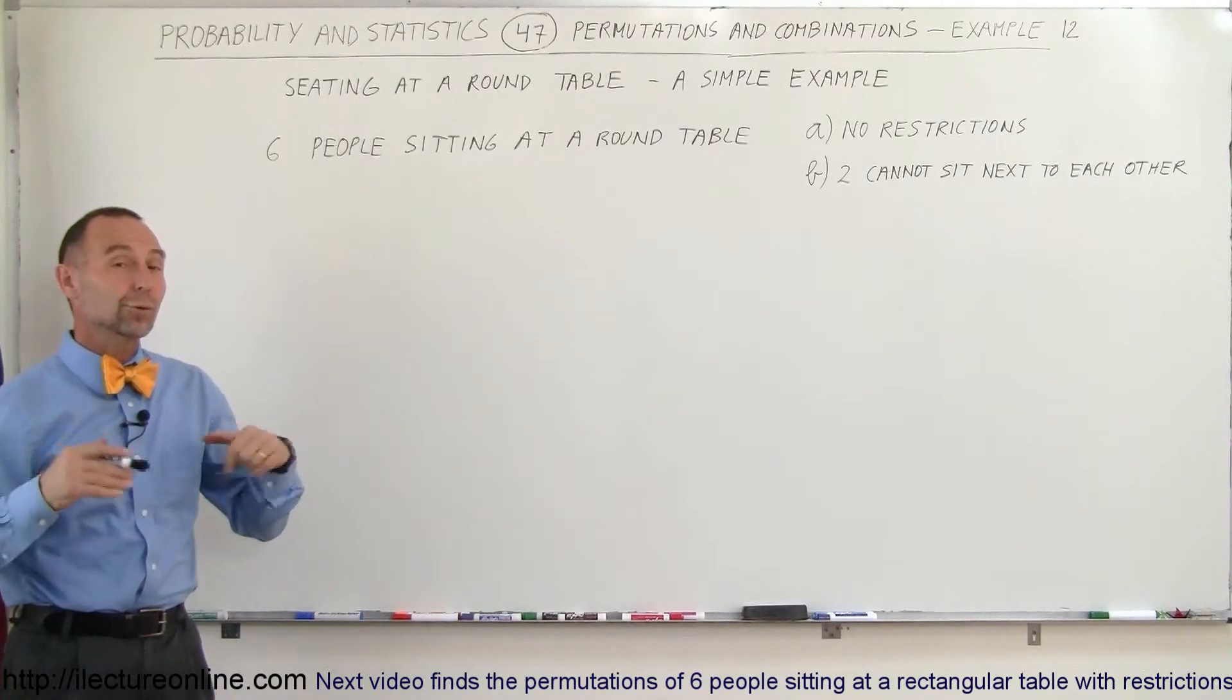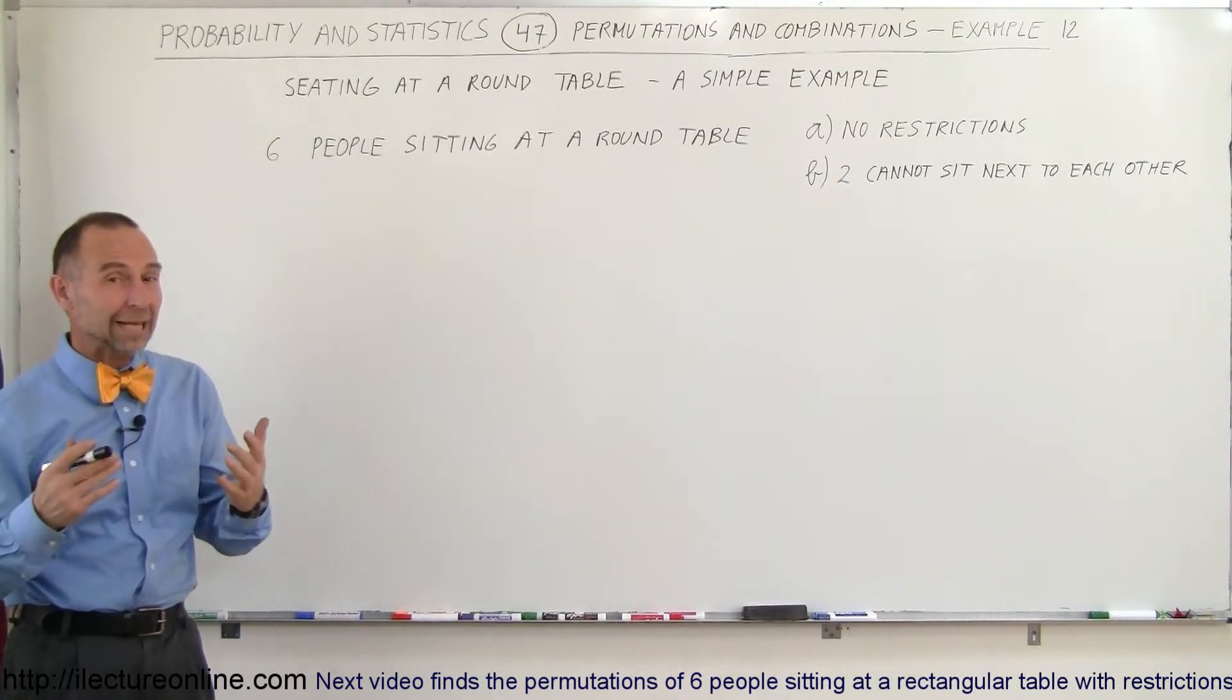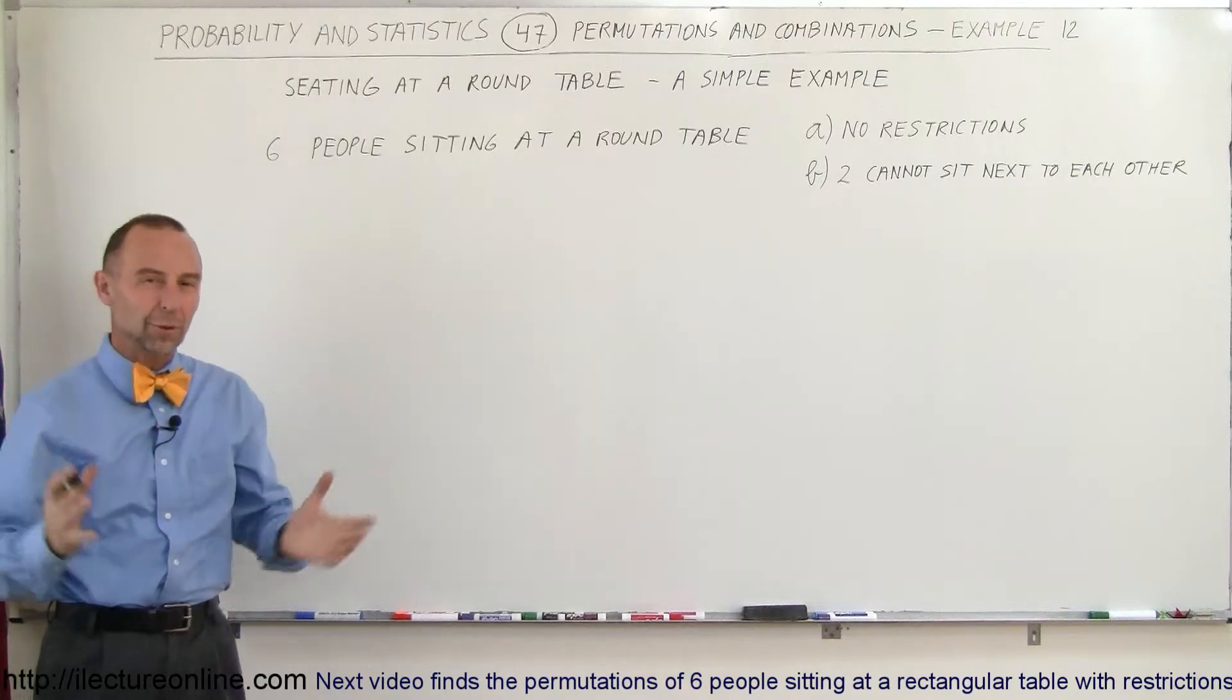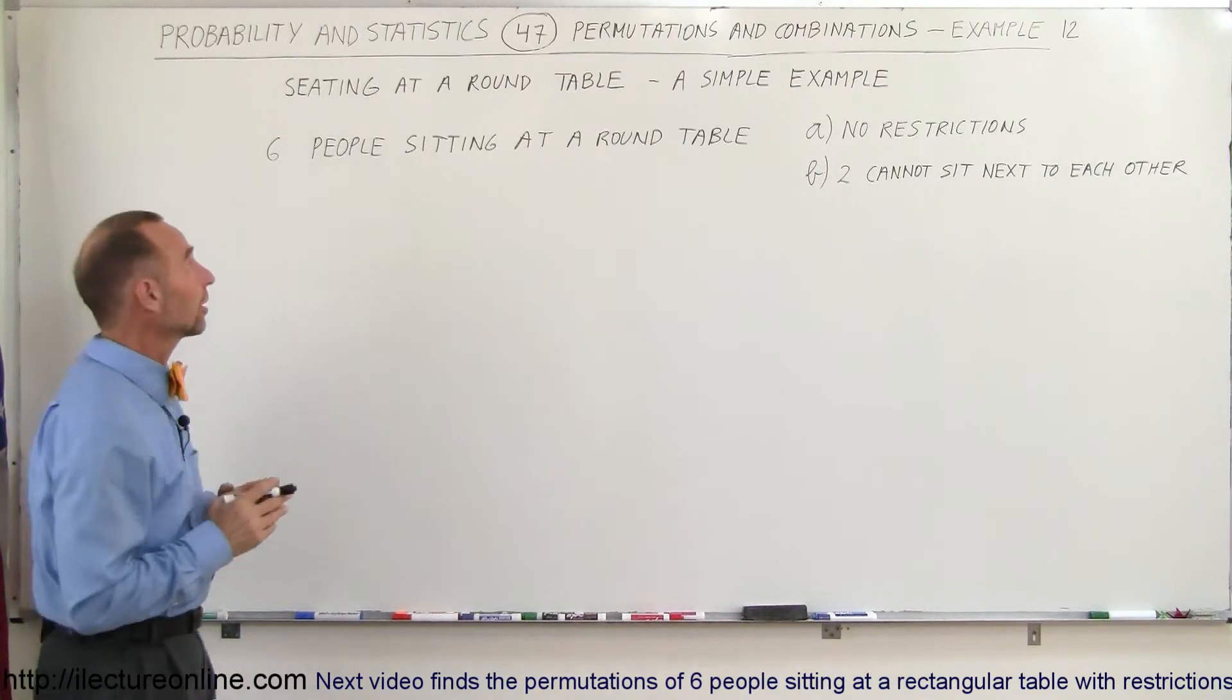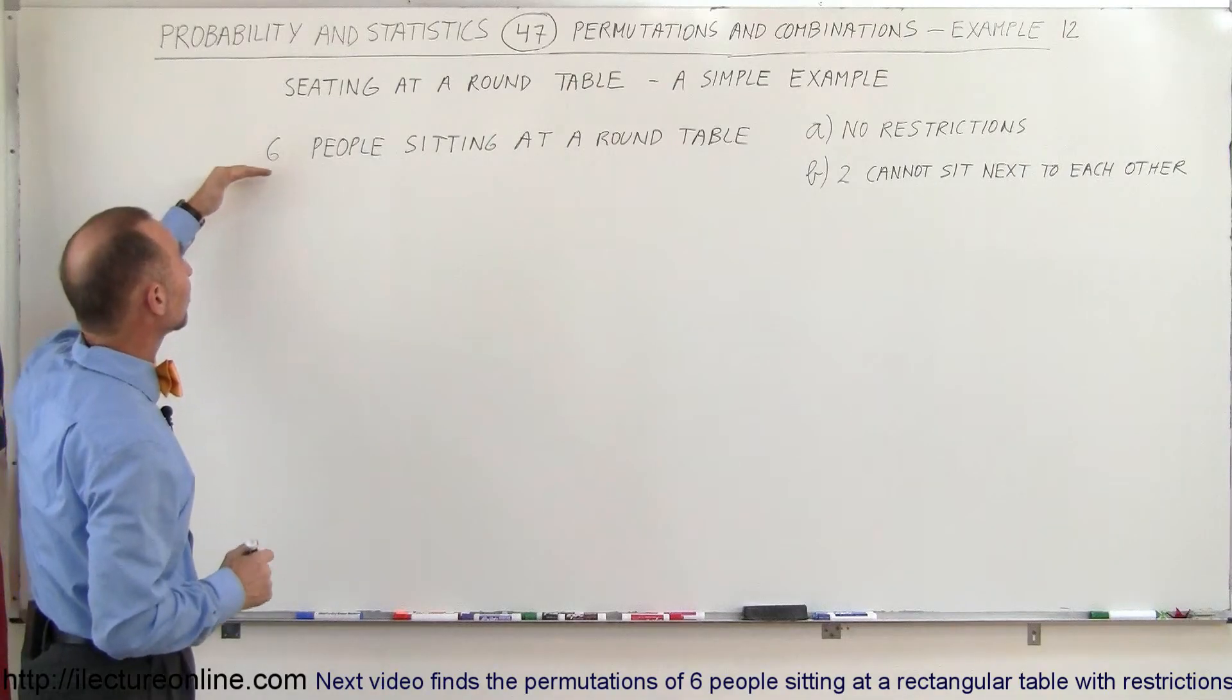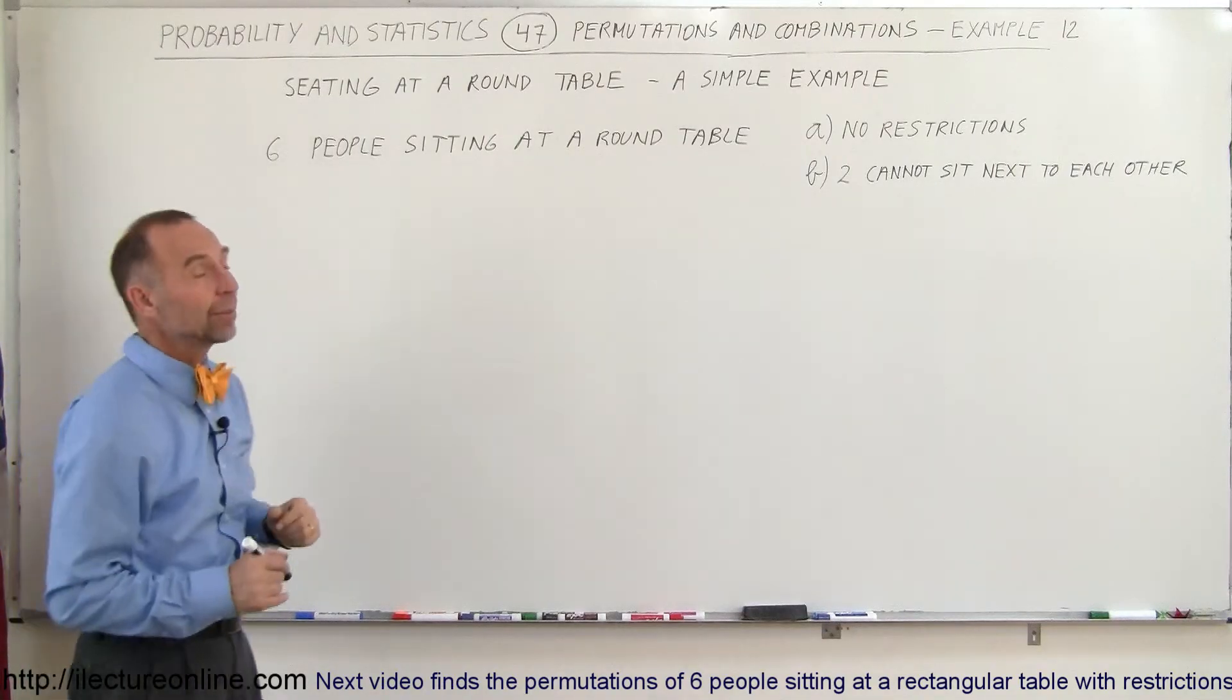Welcome to our lecture online and now we're going to do an example that's a little bit more complicated. An example about seating people around a round table. In this case we're going to have a restriction. So we're starting out with a round table and we're trying to seat six people around that round table.